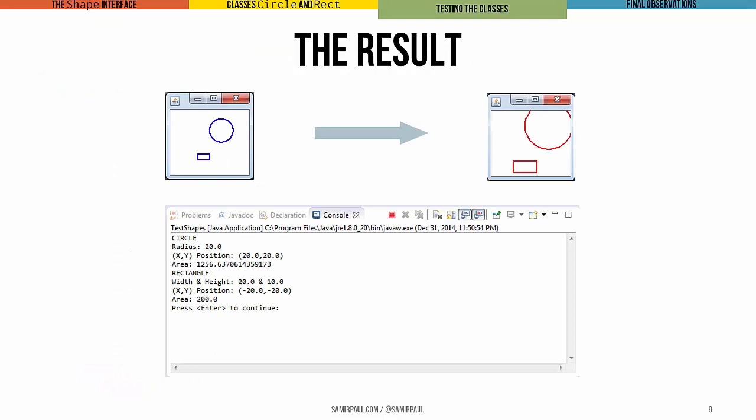We can see the final result of this program here: we start with a blue circle and a blue rectangle, and after hitting enter we end up with a red circle and a red rectangle, both of which have been stretched.